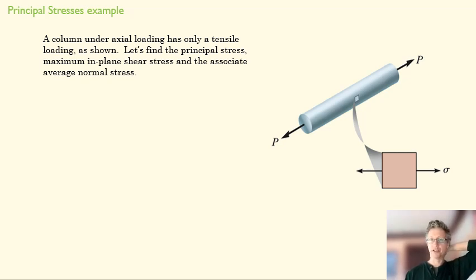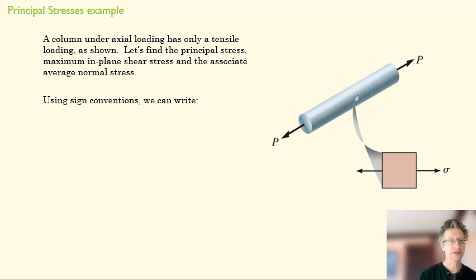So we're going to start with a simple example, a column under axial loading only has tensile loading. So we're going to find our principal stresses, our maximum in-plane shear stress, and associated average normal stress. So this seems like an almost too easy example, right? All we have here is a normal stress. So my three unique vectors are sigma_x = sigma, sigma_y = 0, and tau_xy = 0.